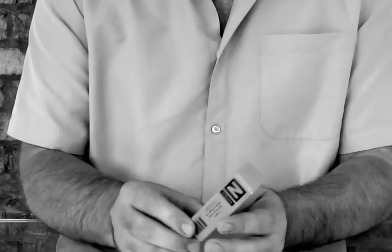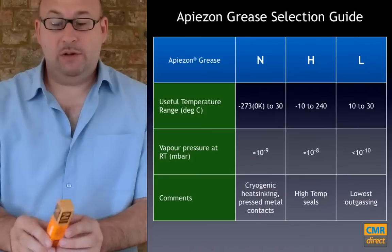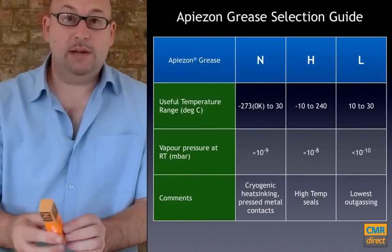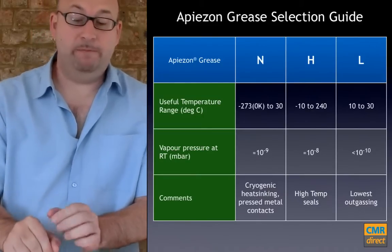Apiezon N has a vapor pressure of better than 10 to the minus 9 millibars at room temperature.